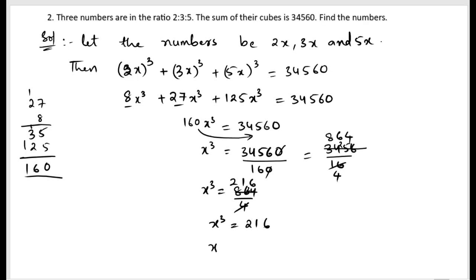Now we need to find out the cube root of 216. So let us write down x equals cube root of 216. Now we will find out factors of 216. 2 into 108, 2 into 54, 2 into 27, 3 into 9, 3 into 3, equals 1.